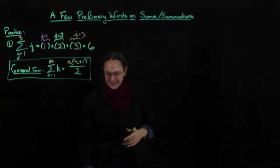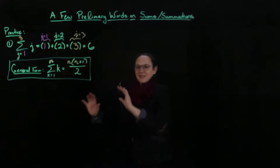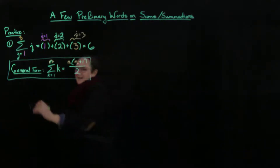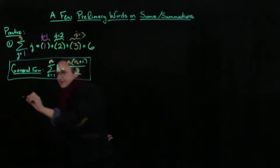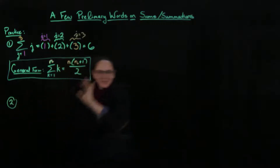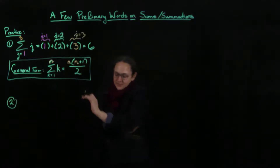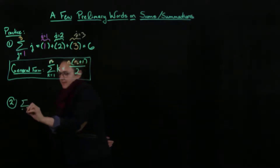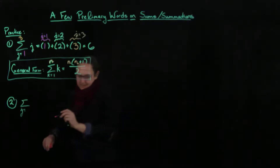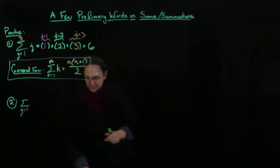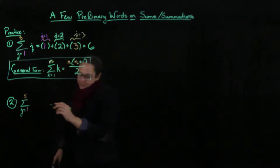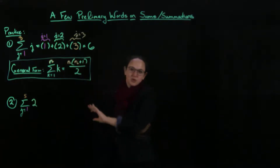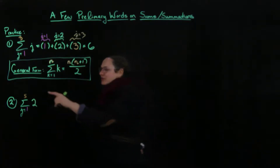My first mathematics class in university was a proof-based calculus class and they made us prove these, which was actually fun — I enjoyed having to prove it, it's kind of cool. Now let's look at this next one: the sum from j=1 to 5 of a constant. What happens when I put in a constant — say 2 — for each value?